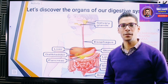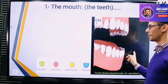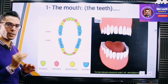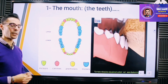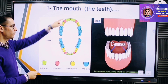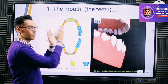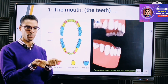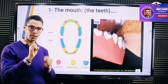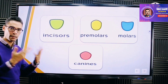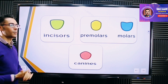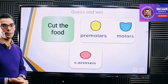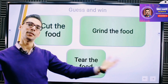Let's discover the organs of the digestive system one by one. The first organ is the mouth, which is made up of two jaws: the upper jaw and the lower jaw. Inside them we find different types of teeth. The incisors are found in the front; the canines are found on both sides of the incisors, up and down; then the pre-molars and molars. Their main function is to cut, crush, and grind the food into smaller pieces so you can swallow them easily.